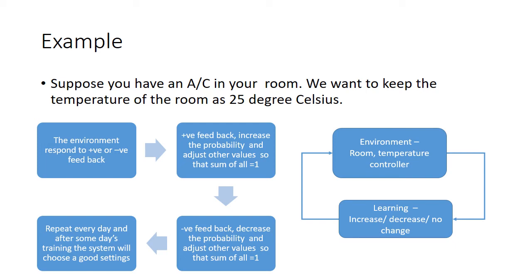If the response is good, the automaton will modify its probability vector by rewarding the probability corresponding to the good setting with a positive increment, and reduce all other probabilities proportionally to maintain the sum equal to 1.